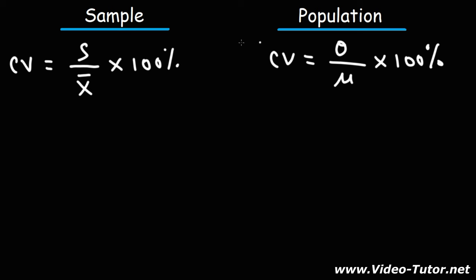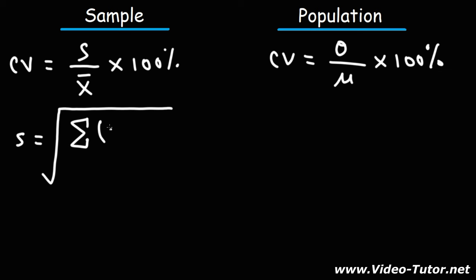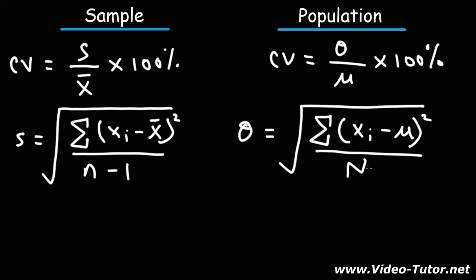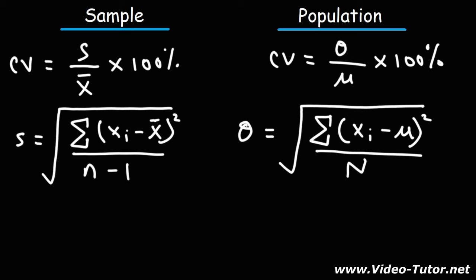In order to calculate the coefficient of variation, you need to know how to calculate the standard deviation of the sample. The formula is the square root of the sum of the squared differences between the data points and the sample mean, divided by the sample size n minus 1. For the population standard deviation, the formula is very similar: the square root of the sum of the squared differences between the data points and the population mean, divided by the population size represented by capital N. So you need to calculate the standard deviation first.